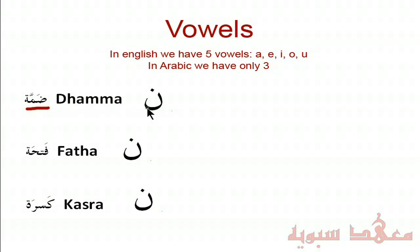So we have here a Noon. The way we write a Dhamma is as follows — it's like a small waw, and it has the sound of U. So the way you pronounce this is Noo. You can watch this video which will pronounce all the letters with a Dhamma.